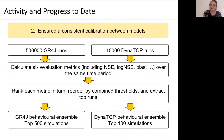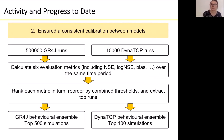The second thing we've been doing is ensuring a consistent calibration between the models. Our models are calibrated to provide the best fit to observed flows. To ensure that our model outputs are as comparable as possible, we've been using exactly the same calibration techniques for two models: GR4J and the dynamic top model.